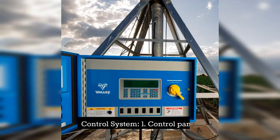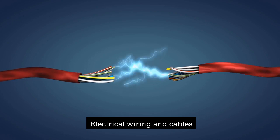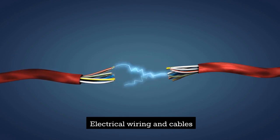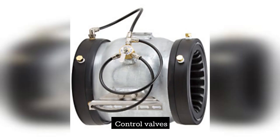Control system: control panels, electrical wiring and cables, switches, sensors, and actuators, and control valves.